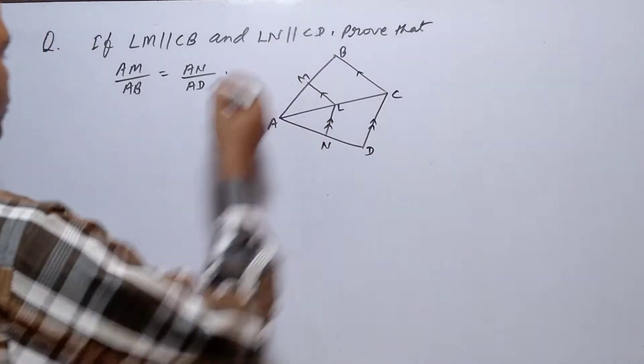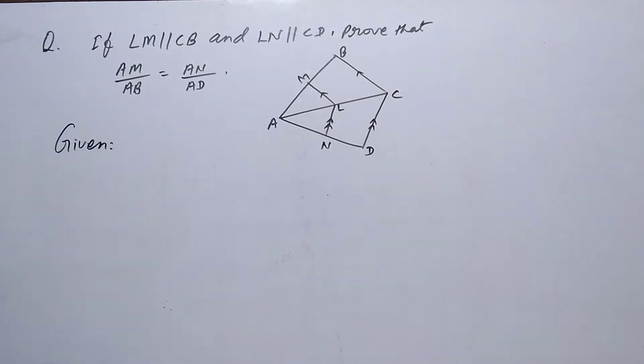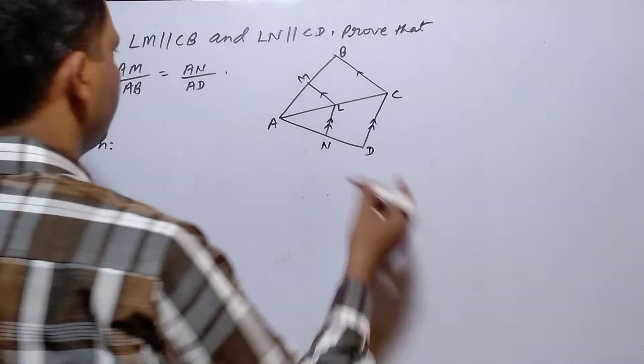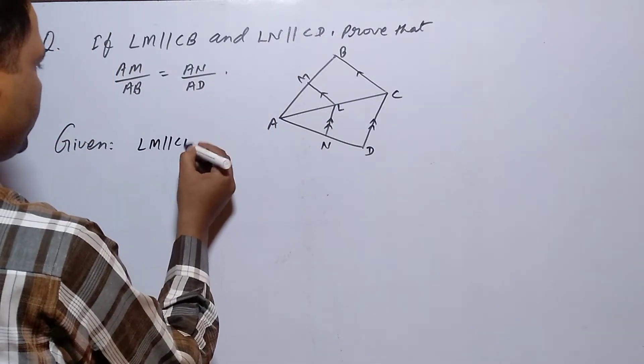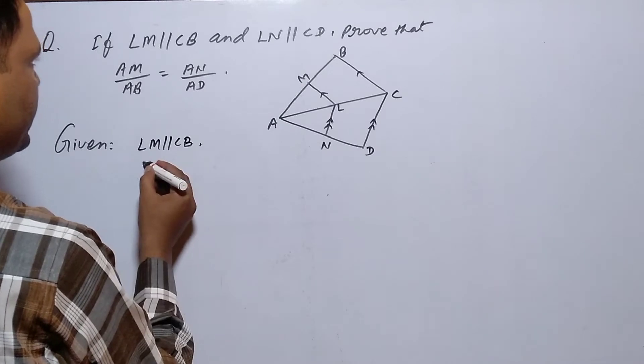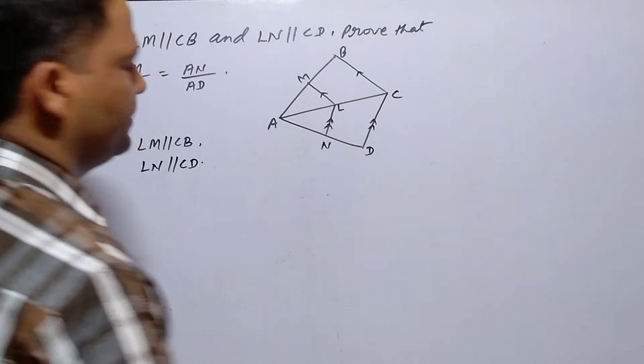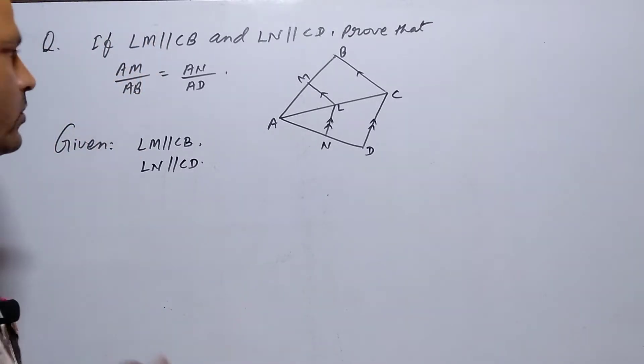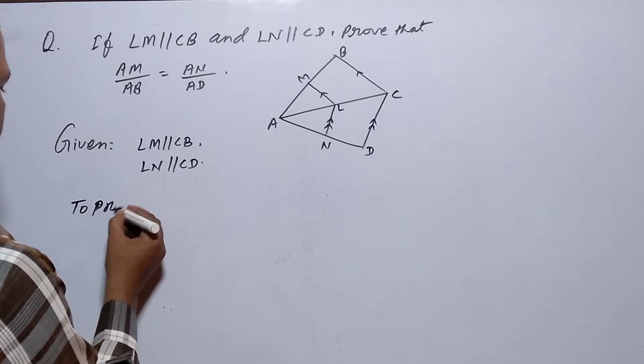First of all, we have to write here given, that means what is given. So what we have seen is that LM is parallel to CB and LN is parallel to CD. To prove means what we have to write.